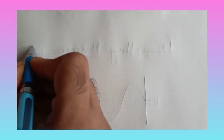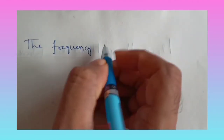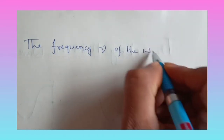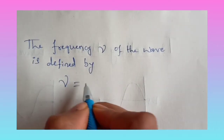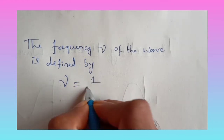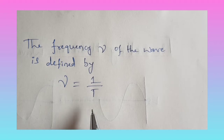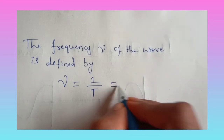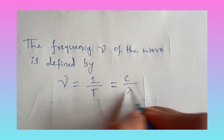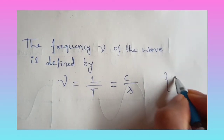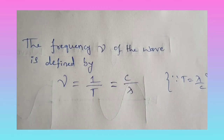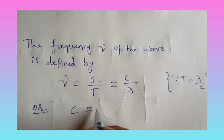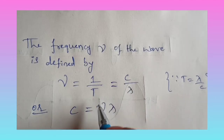Now the frequency nu of the wave is defined as nu equals 1/T. So frequency is the reciprocal of the time period. Therefore 1/T equals c/lambda, because T equals lambda/c. We can also write this as c equals nu times lambda. Call this equation number five.